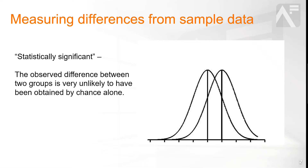When analysts say that a difference they have observed is statistically significant, it means that they have calculated the probability that the difference was obtained by chance, and they've made a decision that the probability is low enough that we can have confidence that there's a true difference in the general population.